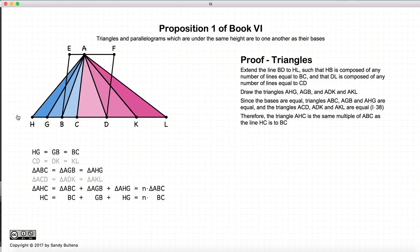No matter how many segments I put along, as long as each of these segments is equal, the area of the larger triangle that is formed will always be the same multiple of ABC as the base is of BC.